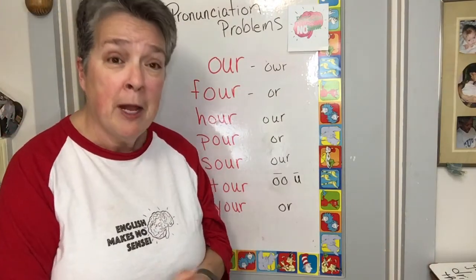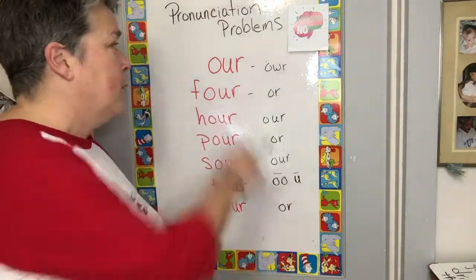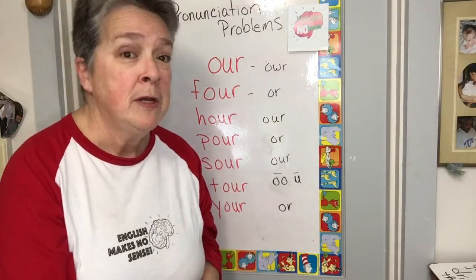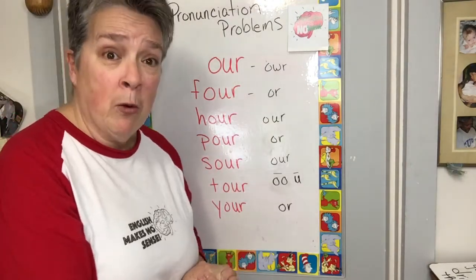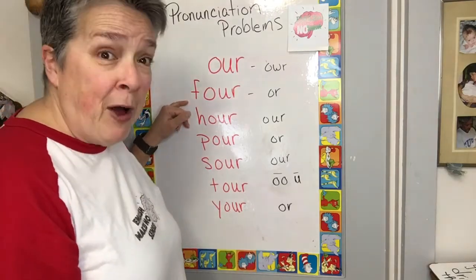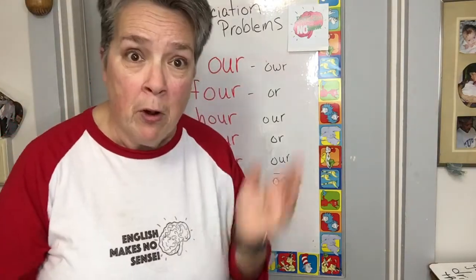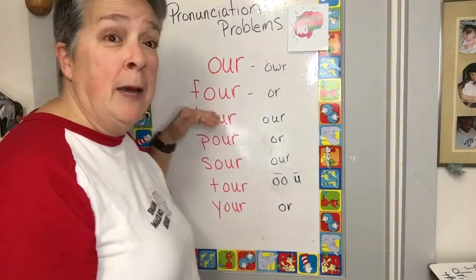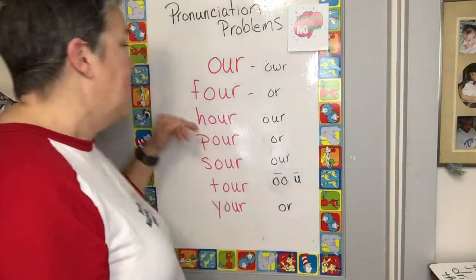We're gonna talk about how we take small words like 'our' — O-U-R — O-U makes the 'ow' sound, and we put an R on it, we get 'our.' Then we take an F and put an F on it, we get... no, we get 'for.' Huh? But this is 'our'... but this is 'for.' English.